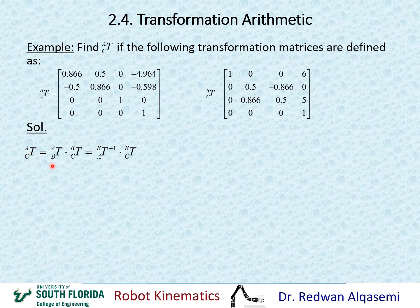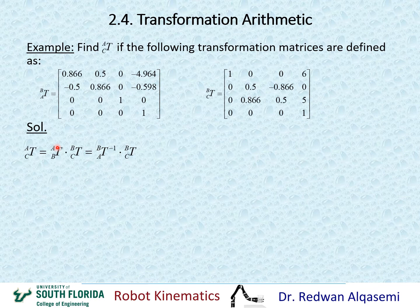Do we have T of B relative to A? We don't, but we have the opposite — T of A relative to B. So we can get the inverse of this, which represents T of B relative to A. I'm going to use T of A relative to B inverse, which is T of B relative to A. Does T of C relative to B exist? Yes, it does exist right here, and it doesn't need to be changed or inverted. So I can use T of A relative to B inverse times T of C relative to B.